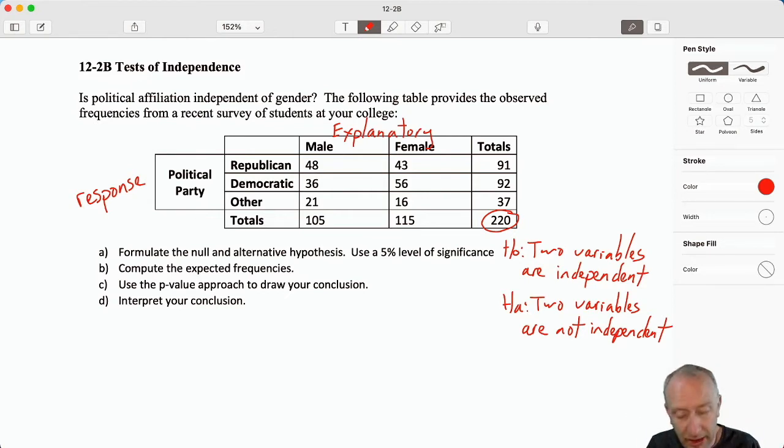Let's make sure we add our terminology here: gender is our explanatory variable, political affiliation is our response variable. So here we're testing to see if political party is somewhat influenced by gender. Okay, so our expected frequencies. Well, first we need to know of the 220,